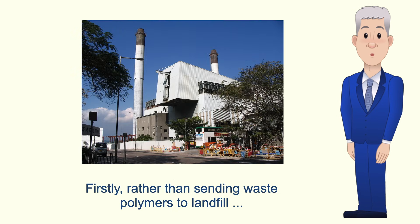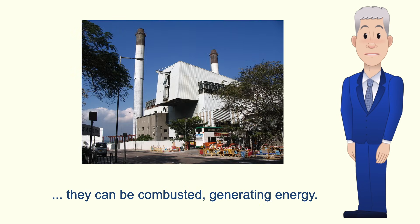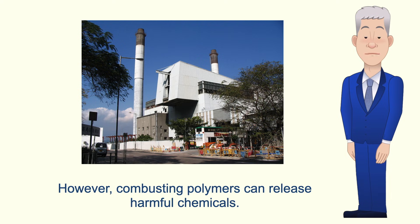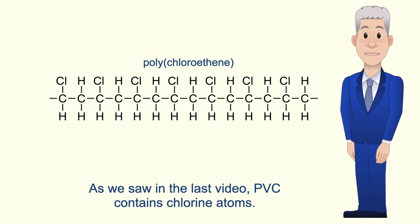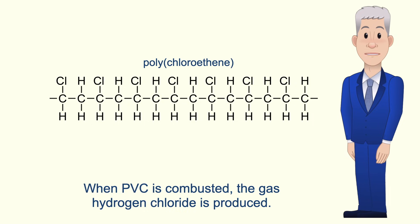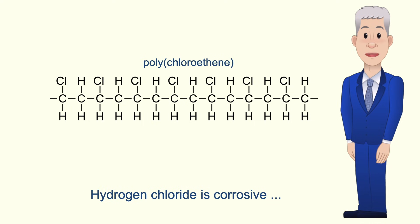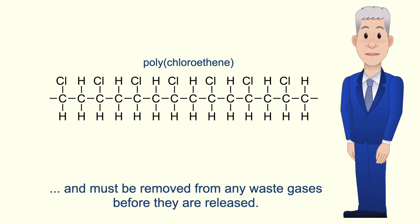Firstly, rather than sending waste polymers to landfill, they can be combusted to generate energy. However, combusting polymers can release harmful chemicals. A good example is polychloroethene, or PVC. As we saw in the last video, PVC contains chlorine atoms, and when PVC is combusted the gas hydrogen chloride is produced. Hydrogen chloride is corrosive and must be removed from any waste gases before they are released.